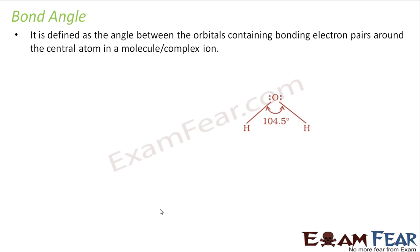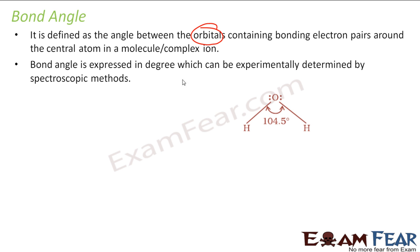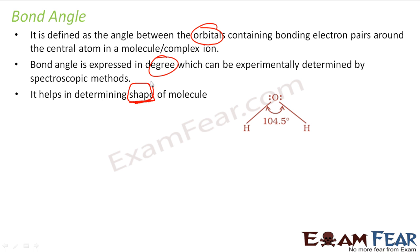After bond length, the next parameter is bond angle. This defines the angle between the orbitals containing the electron pairs around the central atom. For example, water (H2O) has a bond angle of 104.5 degrees — a value obtained experimentally using spectrometry and x-ray techniques. Bond angle helps in determining the shape of the molecule.